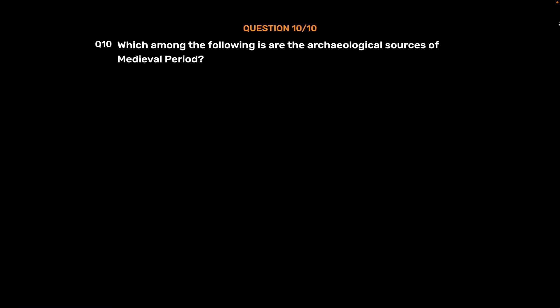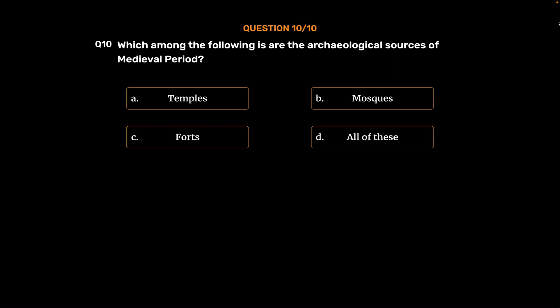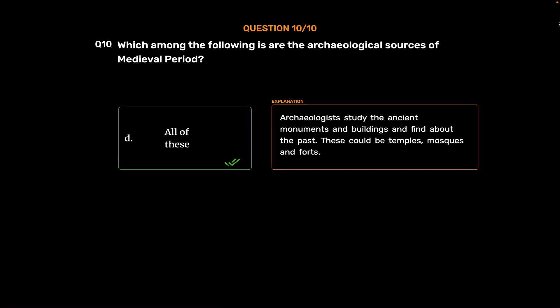Question No. 10. Which among the following are the archaeological sources of the medieval period? Option A: Temples. Option B: Mosques. Option C: Forts. Option D: All of these. The correct answer is Option D: All of these. Archaeologists study ancient monuments and buildings to find out about the past. These could be temples, mosques, and forts.